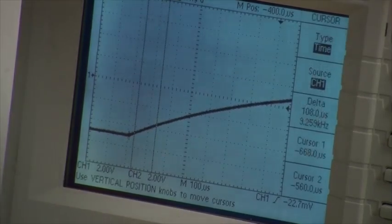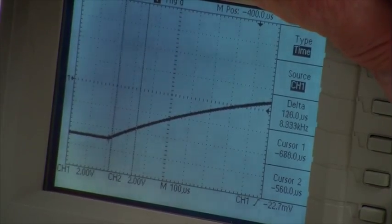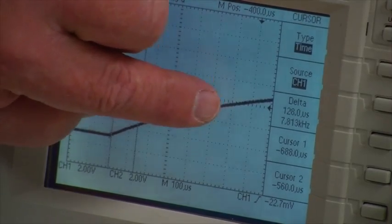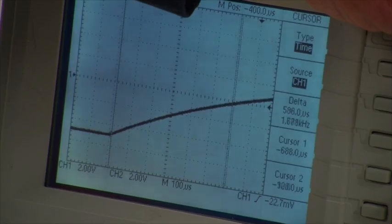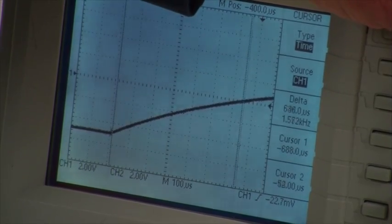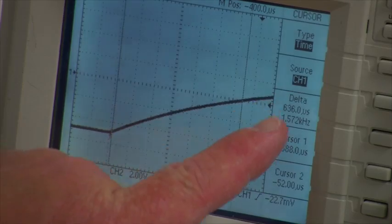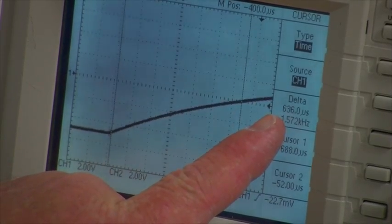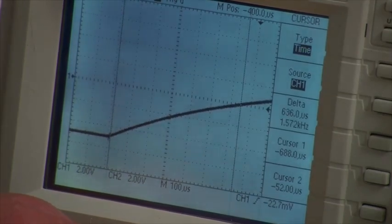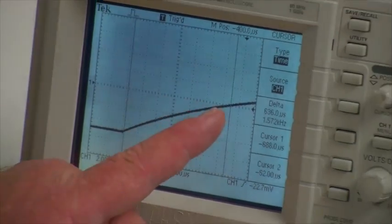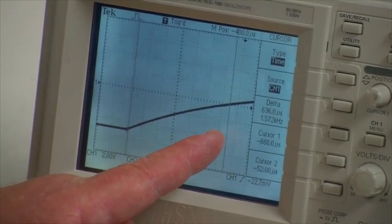It starts right here and goes up to cross the axis right there. So I'll bring in the time cursors. I'll set one of the cursors right here, and I'll set the other cursor over here where the signal crosses the axis. So that time is about 640 microseconds. Now, the equation developed in the instructions tells us that this rise time divided by the natural log of 2 gives us the time constant.